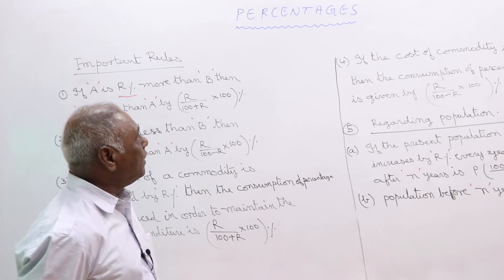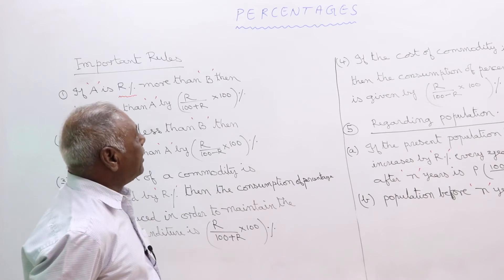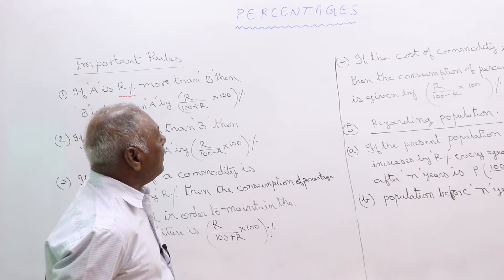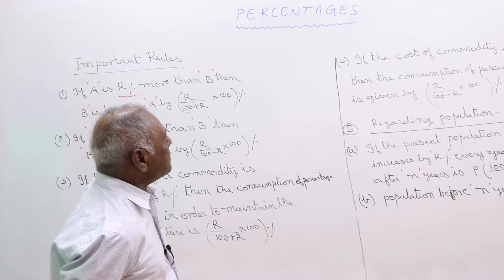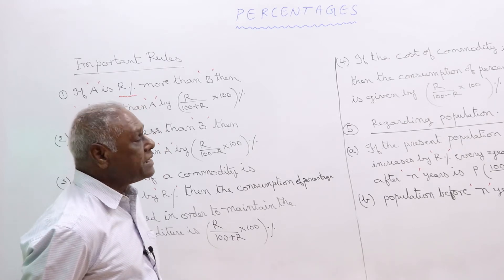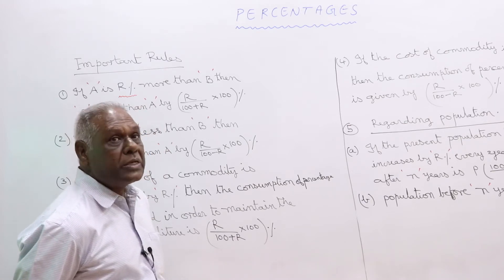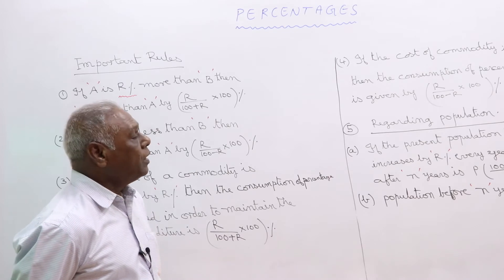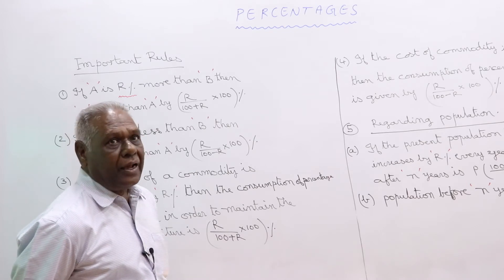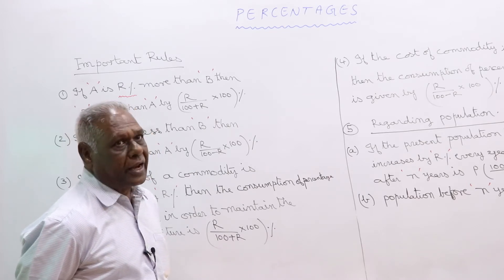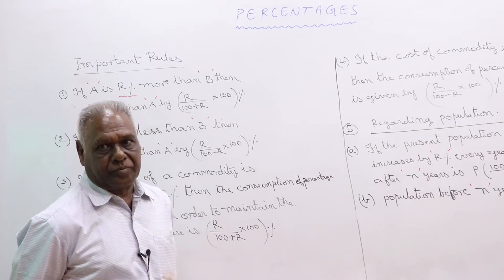It can also be explained as a fraction whose denominator is 100, and the numerator is called the rate per cent.